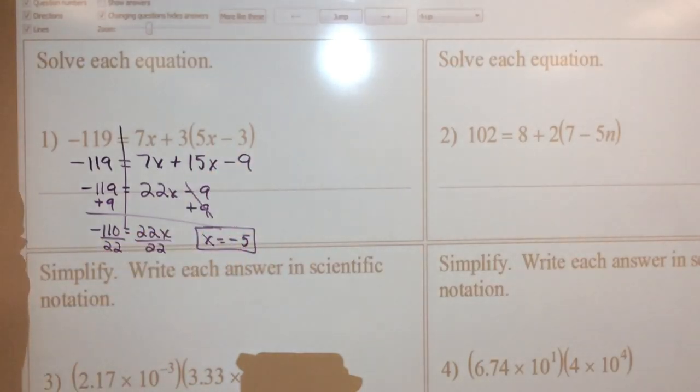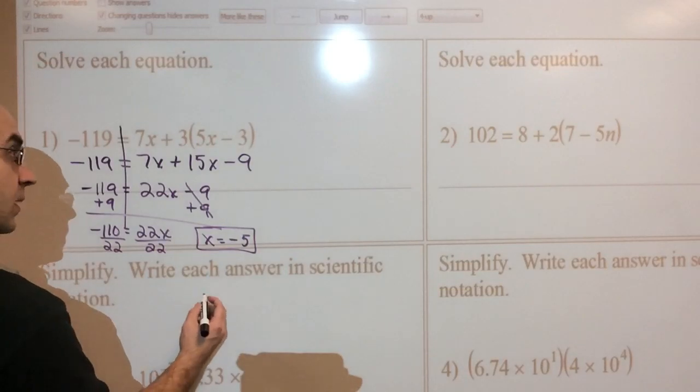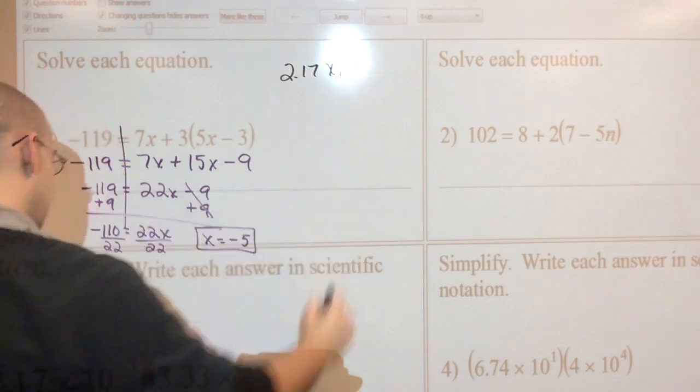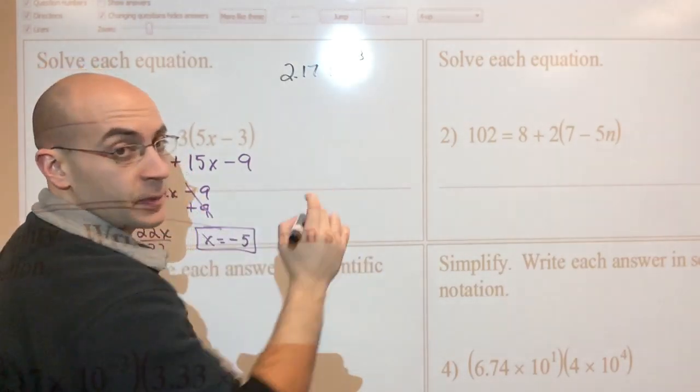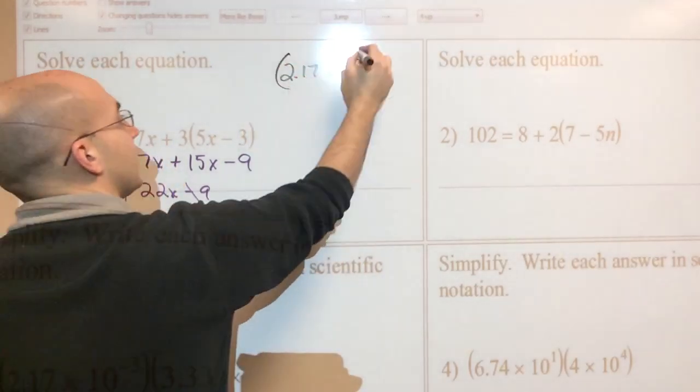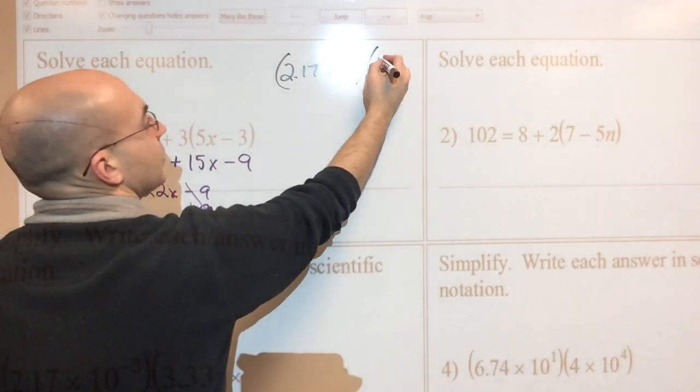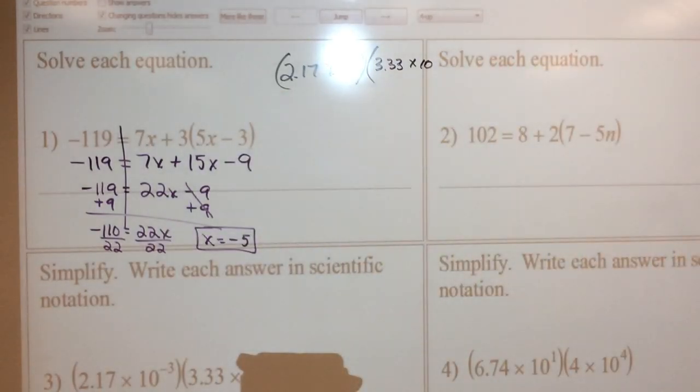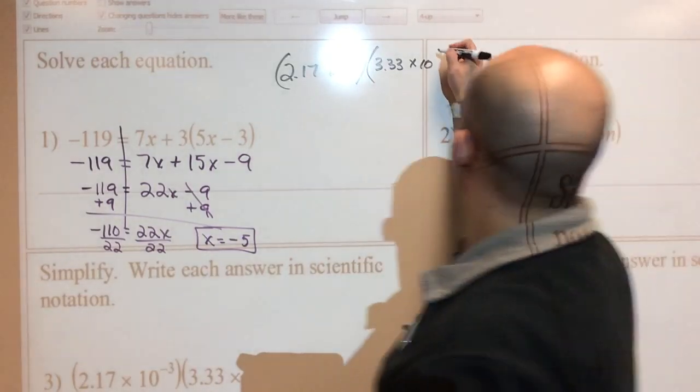Go ahead and try out number 2 while I work out this one here. So we're going to jump to scientific notation. Let's go ahead and just rewrite it over here. This is 2.17 times 10 to the negative 3rd power. Remember, a negative exponent never means a negative number. It just means it's a really small number, like a decimal. And then it's being multiplied by 3.33 times 10 to the third power.